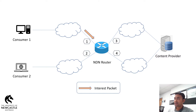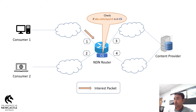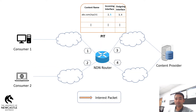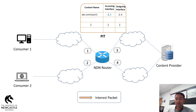Once the interest packet arrives at the edge router, the router first checks if the requested content is in its content store, which is a cache memory of the router. If the content is not present in the content store, the router will then check if it has an entry for the same content in its Pending Interest Table, or PIT in short. If there is an entry, the router will add the incoming interface number to the existing entry and will not forward the interest packet, as it has already forwarded a request for the same content for some other consumers. Otherwise, it will make an entry into the PIT and forward it to the destination.